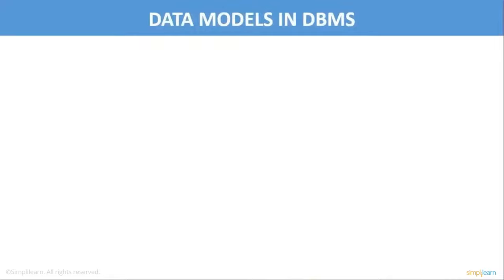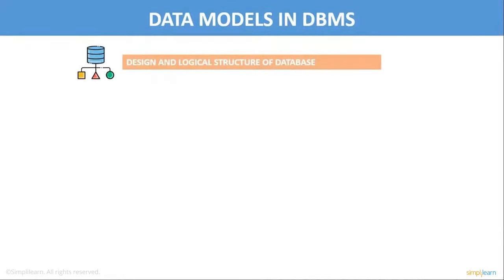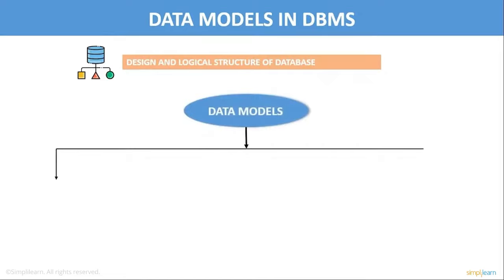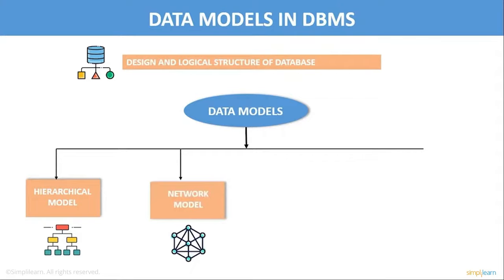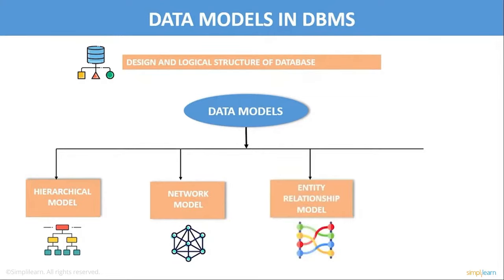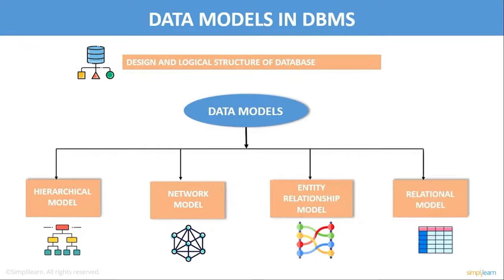Data Models in DBMS: A data model defines how data is connected to each other and how it is processed and stored inside the system. It also defines the logical structure and design of data in DBMS. Data models are broadly classified into four types: Hierarchical Model — one of the first DBMS models, where data is organized in a tree-like structure and connected by links; Network Model — an extension to hierarchical model, using a graph-like structure supporting many-to-many relationships; Entity Relationship Model — represents real-life entities in a pictorial form using different shapes; and Relational Model — the most commonly used, which represents data in the form of tables.